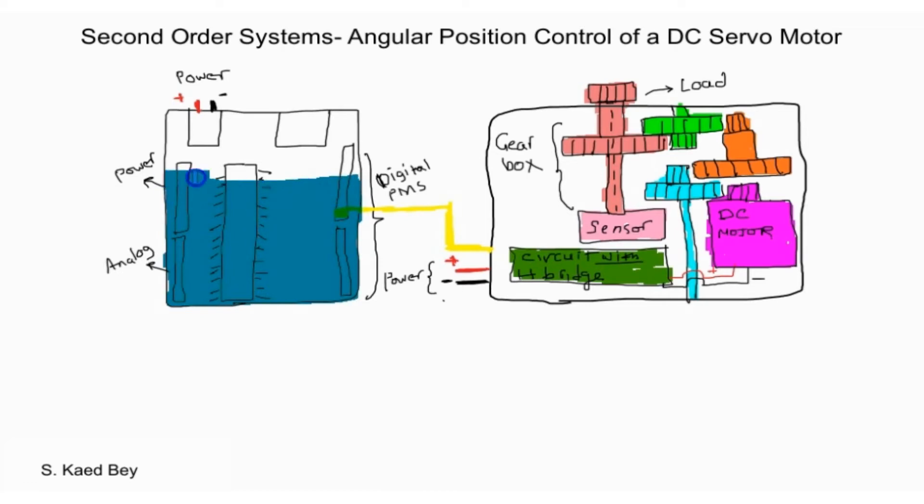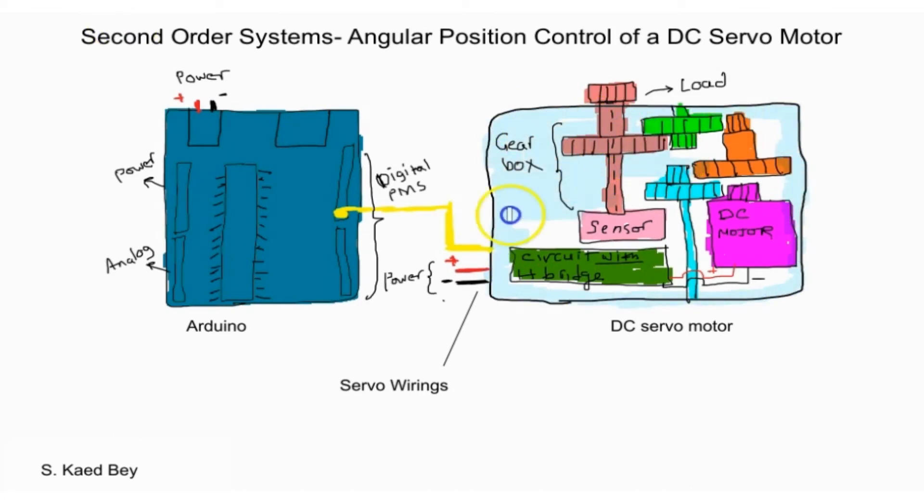Most hobby servo motors have three simple connections: the black or brown is the ground wire, the red is the power wire, and the yellow or white is the pulse width modulated wire. The yellow PWM input wire to the servo motor will be connected to one of the Arduino's digital output pins as shown here.